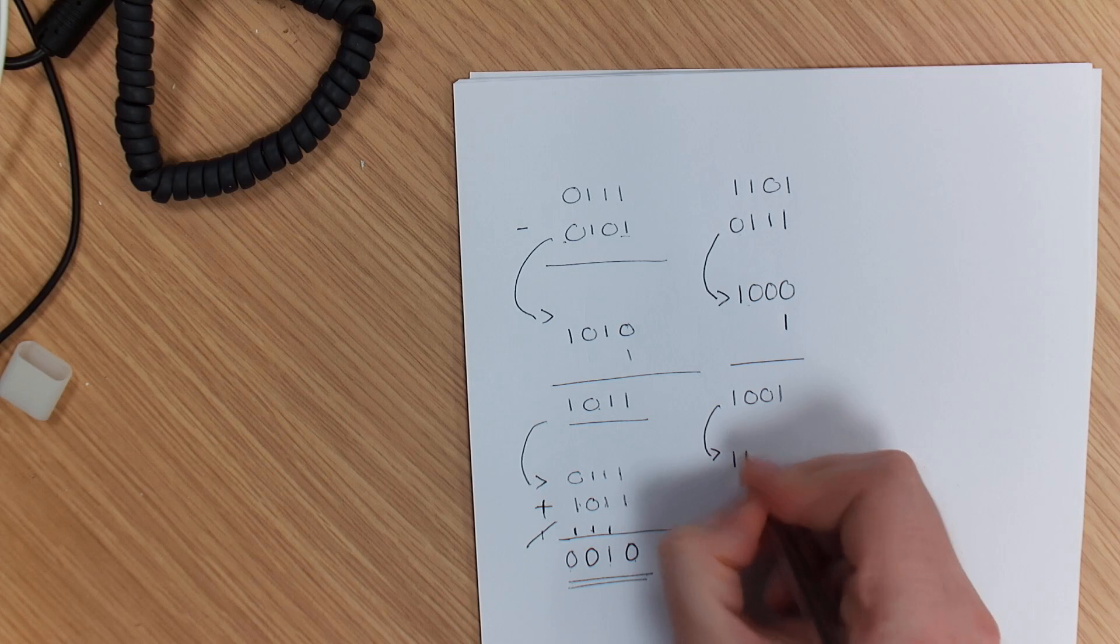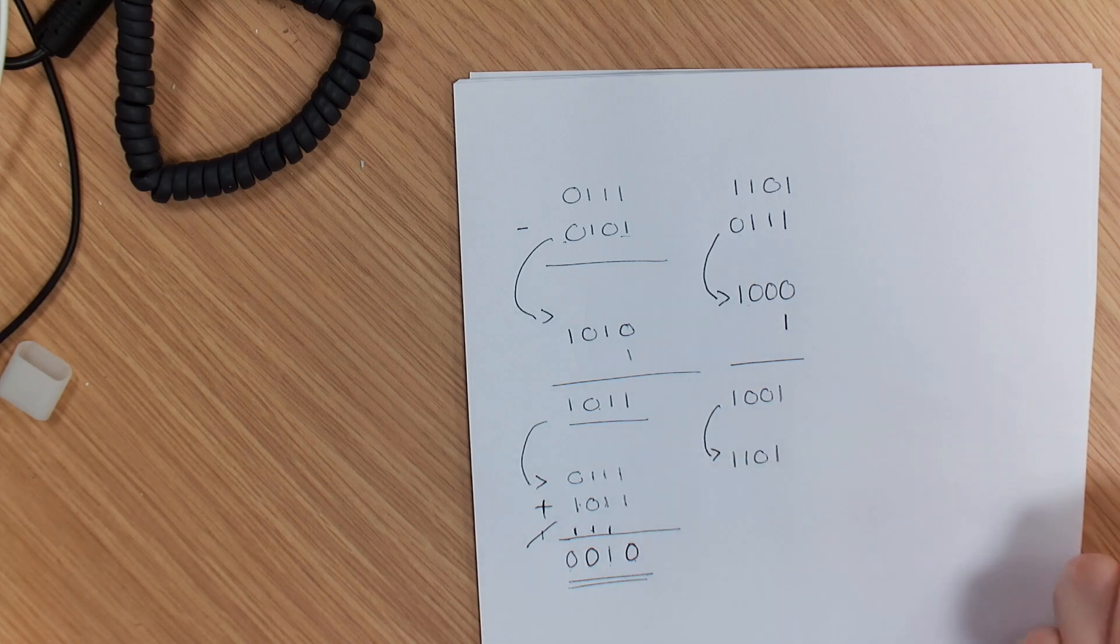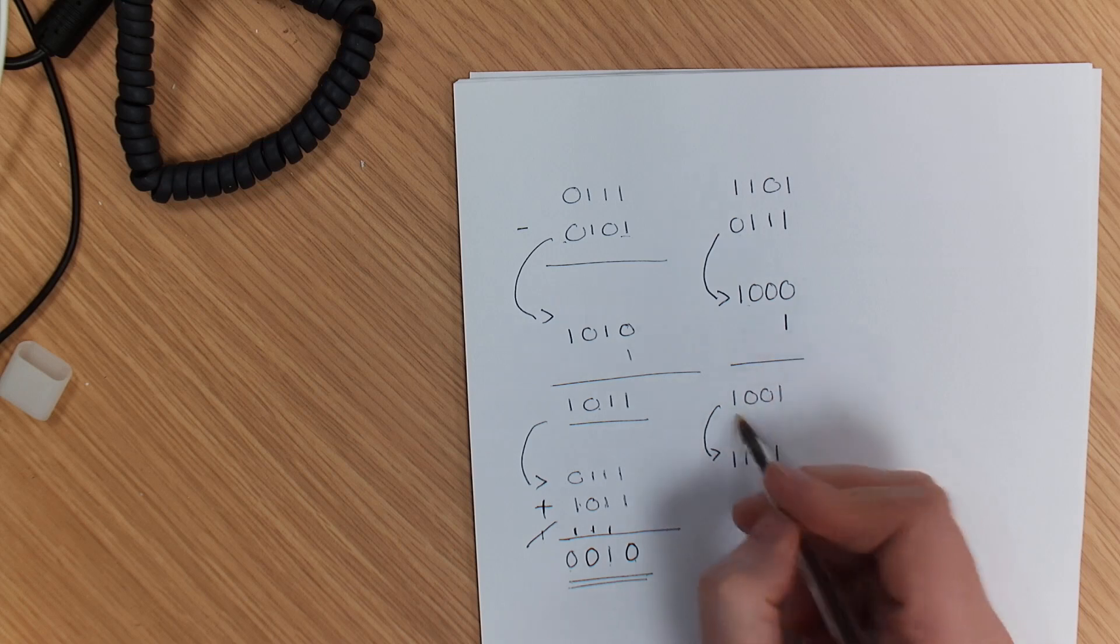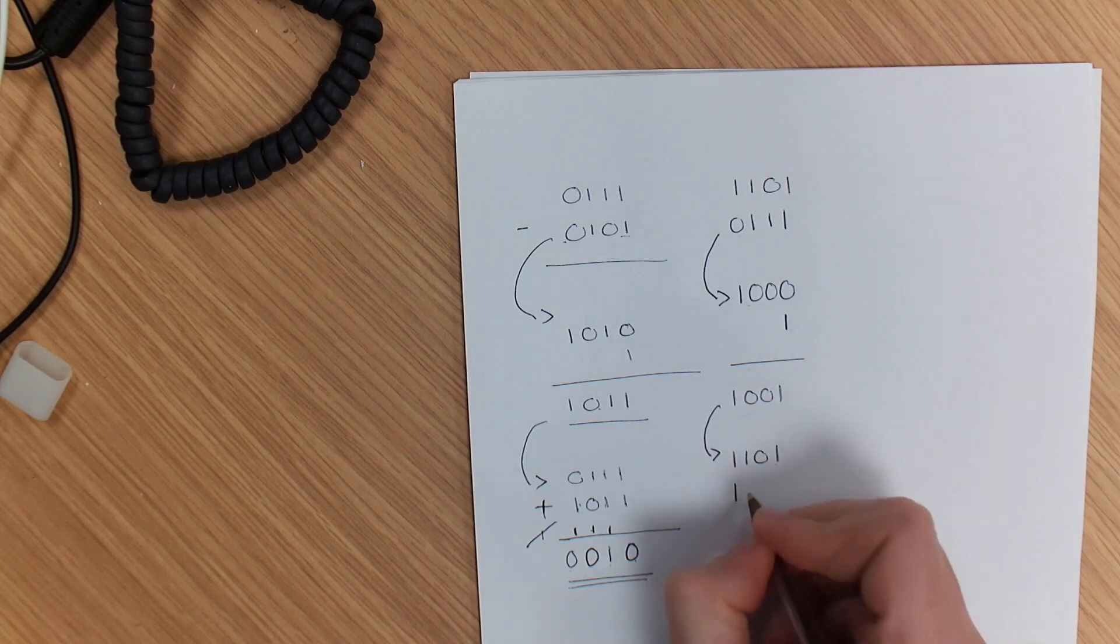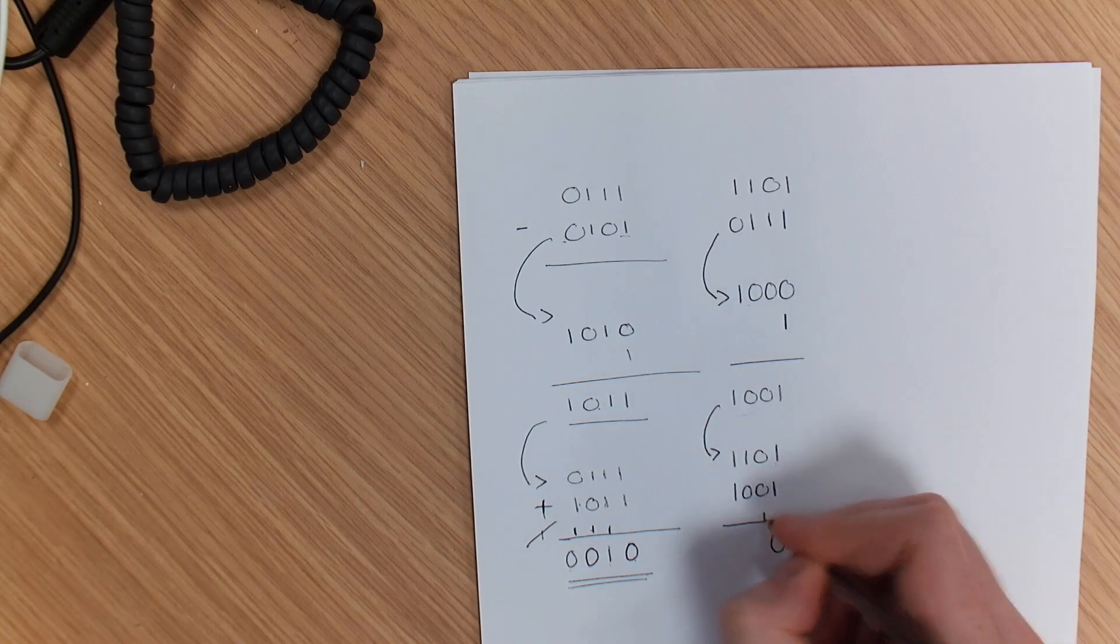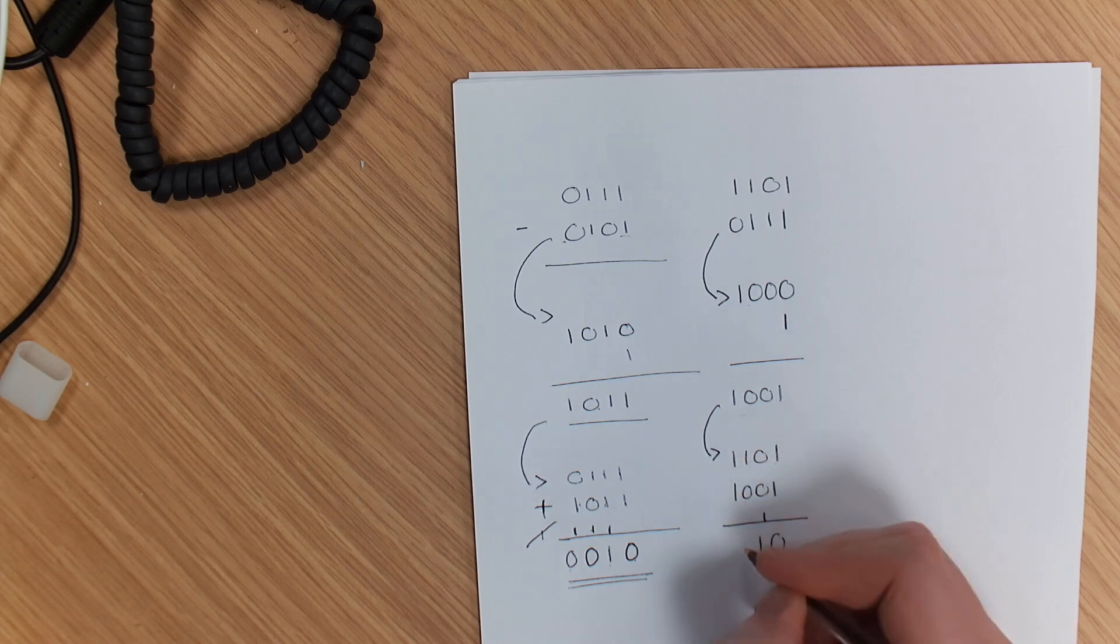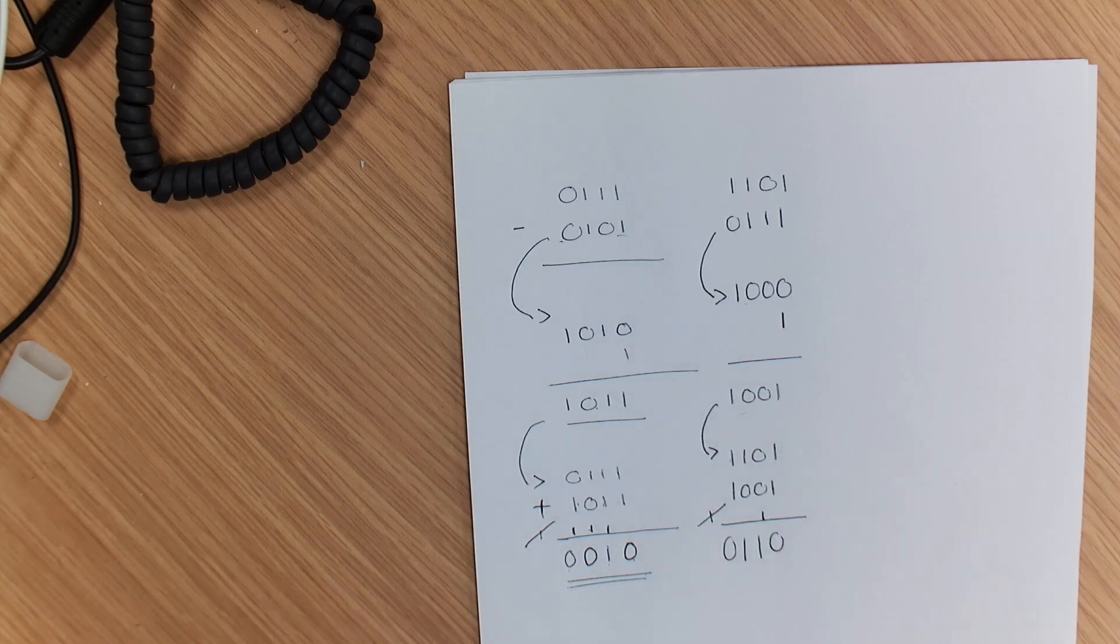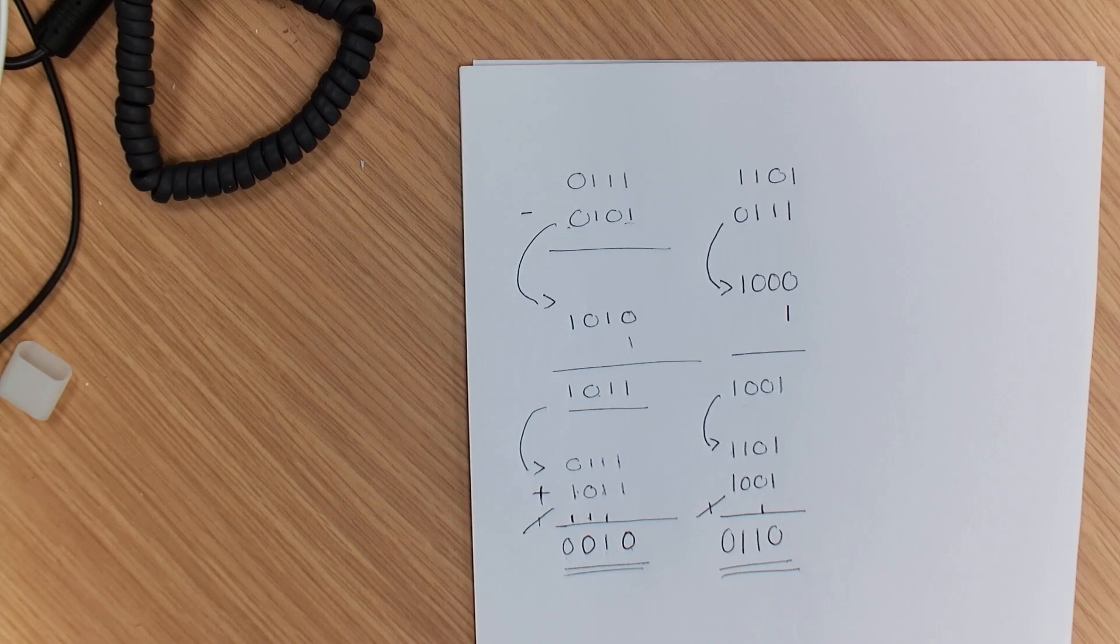Our final step is to add the top number which is 1101. So we're going to add that top number to this new number which is 1001: 1 plus 1 is 0 carry the 1, 1 plus 0 is 1, 1 plus 0 is 1, 1 plus 0 is 1. And you discard that bit, that gives you your answer.